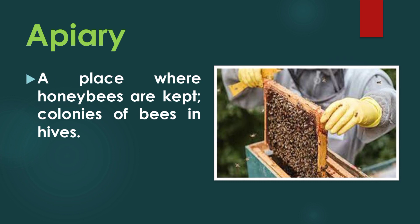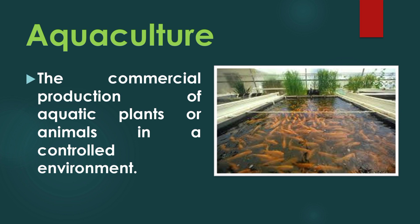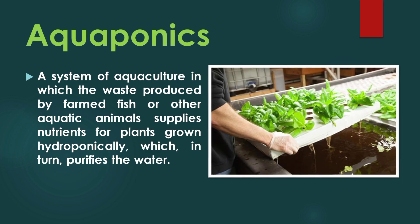Apiary: a place where honeybees are kept — colonies of bees in hives. Aquaculture: the commercial production of aquatic plants or animals in a controlled environment. Aquaponics: a system of aquaculture in which the waste produced by farm fish or other aquatic animals supplies nutrients for plants grown hydroponically, which, in turn, purifies the water.